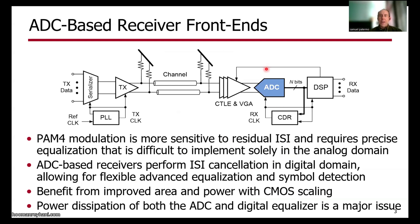This motivates ADC-based receivers, which quantize the output of the receiver front end in order to perform ISI cancellation in the digital domain, allowing for flexible advanced equalization and symbol detection. These architectures should benefit from improved area and power with CMOS scaling, but the power dissipation of both the ADC and digital equalizer is a major issue.